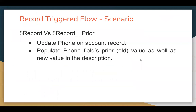Let's understand the requirement that I'm going to demonstrate in this video. I'm going to differentiate the $Record versus $Record__Prior global variables, which are available in the record trigger flow.